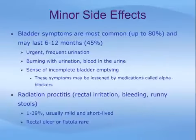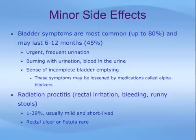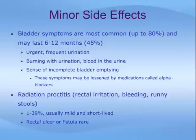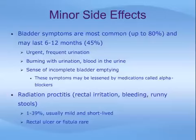The most common side effects of brachytherapy are bladder and rectal irritation and minor discomfort. Bladder symptoms are most common, with up to 80% of men experiencing urgent and frequent urination, especially in the first two months after the procedure when radiation is most intense. These symptoms may persist for up to a year in up to 45% of patients. About one half of men experience burning with urination, which peaks at about one month after treatment. Bladder symptoms may be lessened by the use of medications called alpha blockers, beginning before treatment, reducing caffeine and smoking, and using anti-inflammatory medications as necessary.